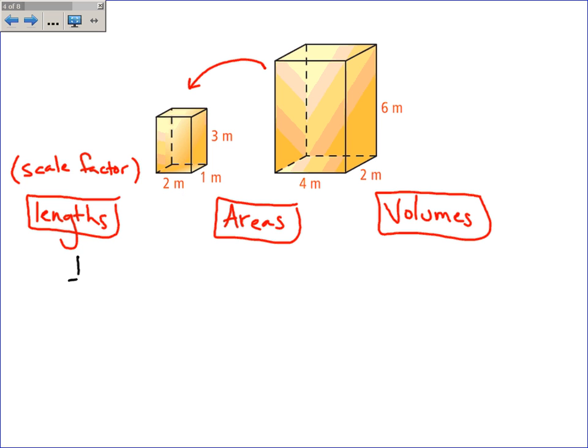And that ratio is 1 half. We just talked about that. So, anything dealing with a length, the perimeter of the base, the height, the length, the width, the diagonal across the middle of it, anything dealing with a length will have the ratio of 1 to 2 or 1 half.